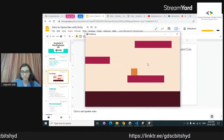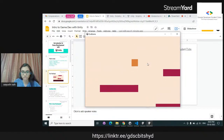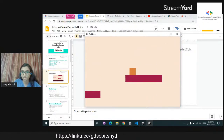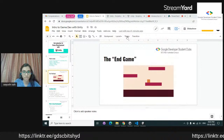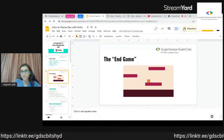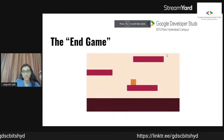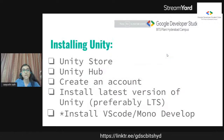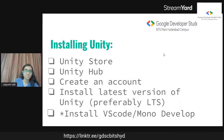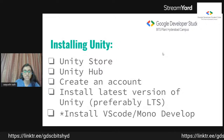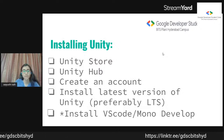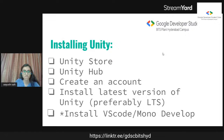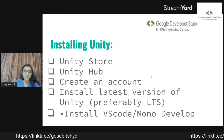This is what we will try to accomplish towards the end of this session. Now to install Unity, first you'll have to go to the Unity store, then click on Install Unity, and it'll get you to Unity Hub. After that, you'll have to create an account and sign in with Google, Facebook, or similar.